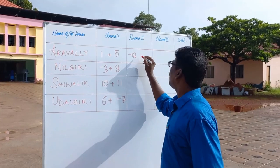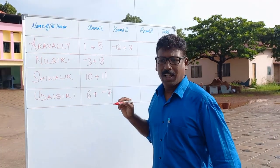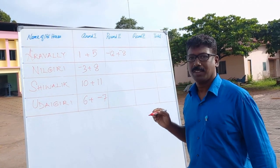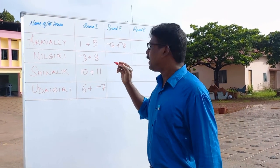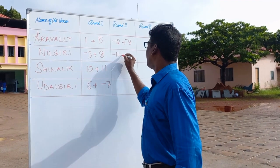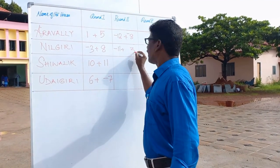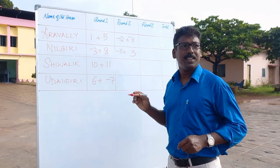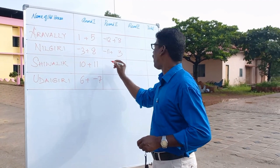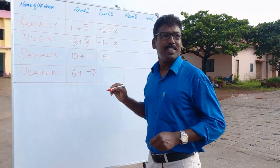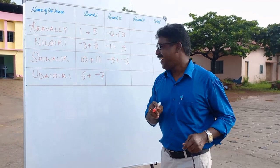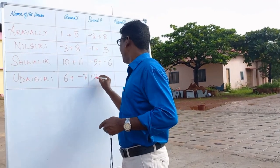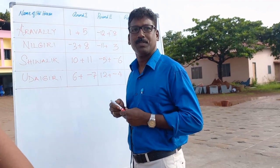Aravali: eight, negative. Neelagiri: negative eleven, three. Shivalik: negative five, negative six. And what do you get? Twelve. Negative. Four.